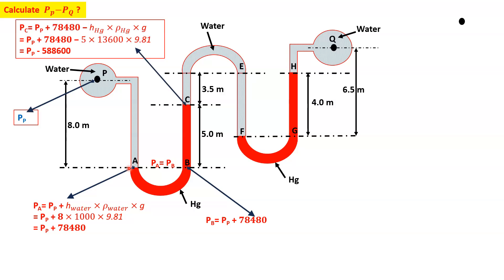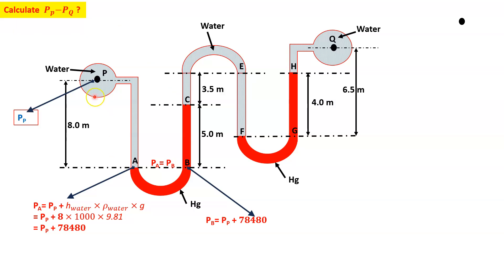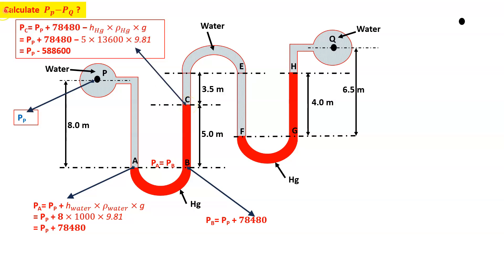Now moving to point C, we are going in the upward direction so pressure will decrease. Pressure at C: PC = PP + 78480 − H_Hg × ρ_Hg × g = PP + 78480 − 5 × 13600 × 9.81, which gives PC = PP − 588600.